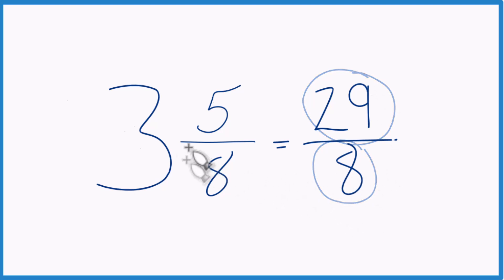Let's do that again. 3 times 8, 24. 24 plus 5, that's the 29. Just bring the 8 across, and there you have it.